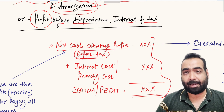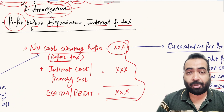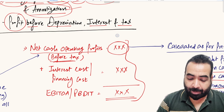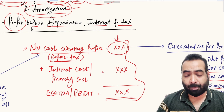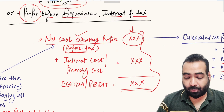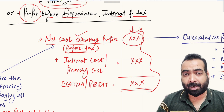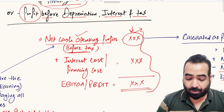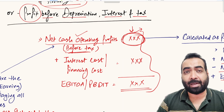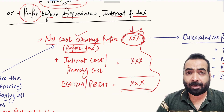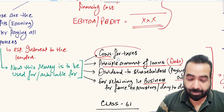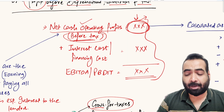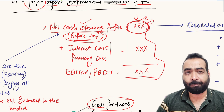Remember: in this net cash operating profit, the interest that you pay to your lenders and debt financers is already deducted. So from these profits, interest has already been paid. These profits are before tax, so any payment of tax to the government shall be made out of these profits.